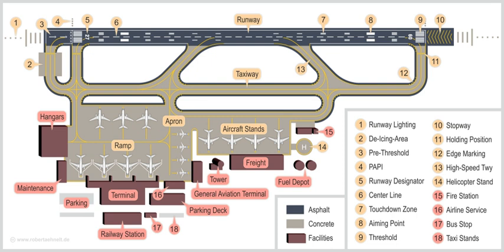Airport guidance signs provide direction and information to taxiing aircraft and airport vehicles. Smaller aerodromes may have few or no signs, relying instead on diagrams and charts. Many airports have lighting that helps guide planes using runways and taxiways at night or in rain or fog. On runways, green lights indicate the beginning of the runway for landing, while red lights indicate the end. Runway edge lighting consists of white lights on both sides of the runway. Some airports have more complicated lighting including centerline lights, approach lighting systems (ALS). Low traffic airports may use pilot-controlled lighting. Along taxiways, blue lights indicate the taxiway's edge, and some airports have embedded green lights indicating the centerline.